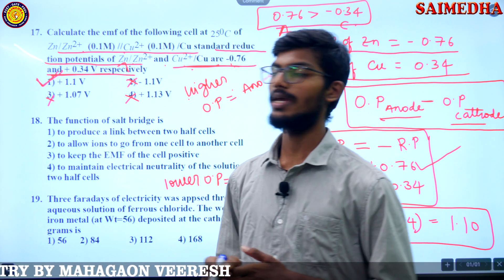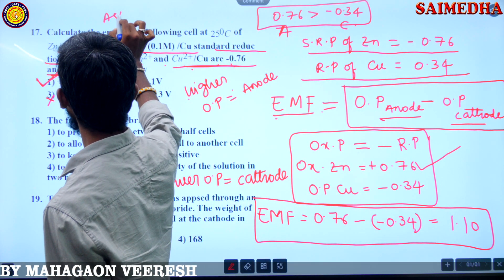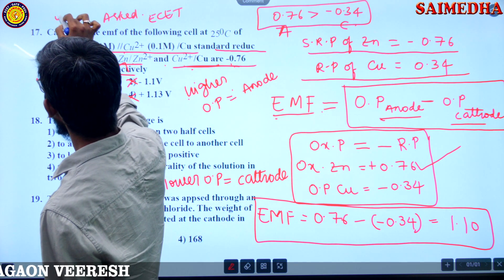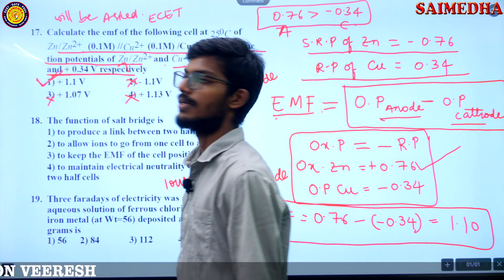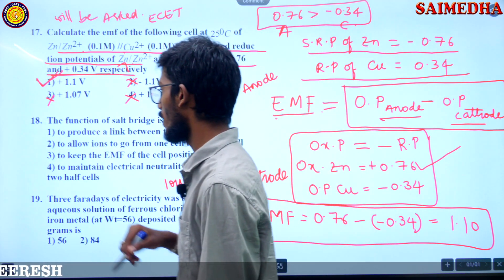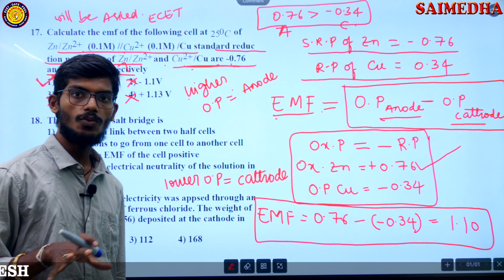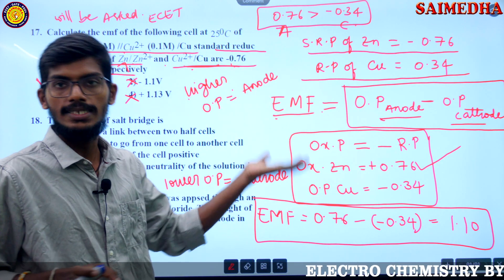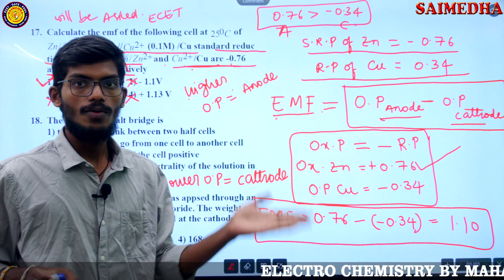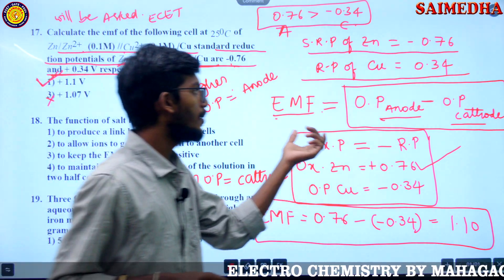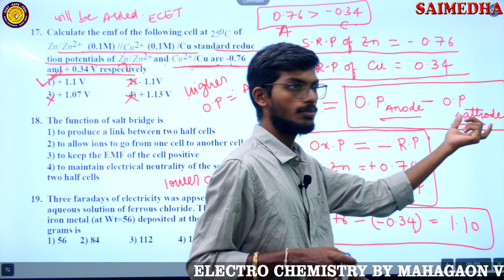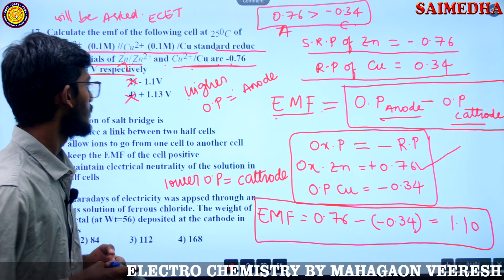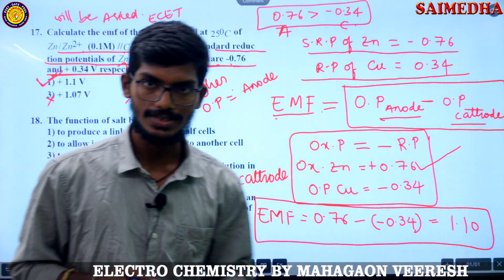This question is already asked in ESET, so it is very important. To summarize: reduction potential is given, convert to oxidation potential, identify anode and cathode, then apply EMF = oxidation potential at anode minus oxidation potential at cathode.